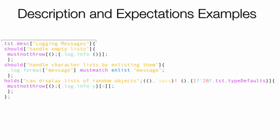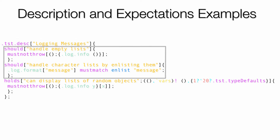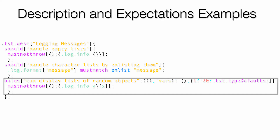Here we have a description. The first line tells us what is being described. The next two statements are the expectations, as I mentioned — we read these aloud as they are presented: 'Logging messages should handle empty lists.' The third statement is a fuzz expectation, read aloud: 'For logging messages, it holds that it can display lists of random objects.' What makes a fuzz expectation different is that it's run a bunch of times, and the code block is given random input from a generator.